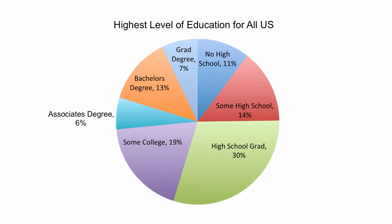pie charts are generally easy to make. For example, here is a pie chart based on the education data from the bar chart I made earlier. I made this pie chart with Excel and just used the defaults, which is why one of the labels is in an odd place. It works, but it's not fabulous.